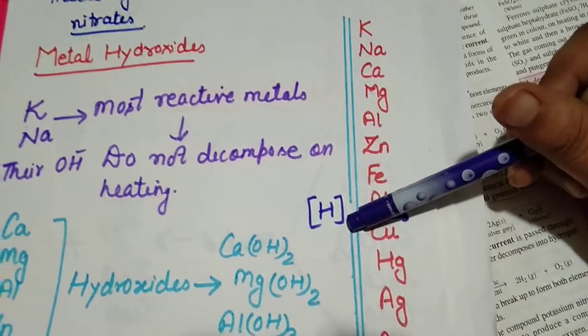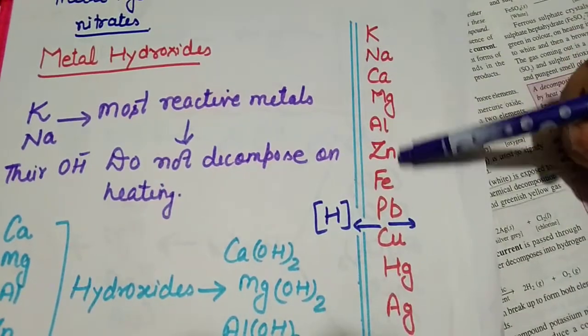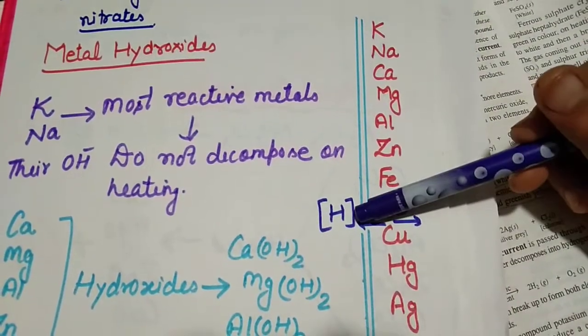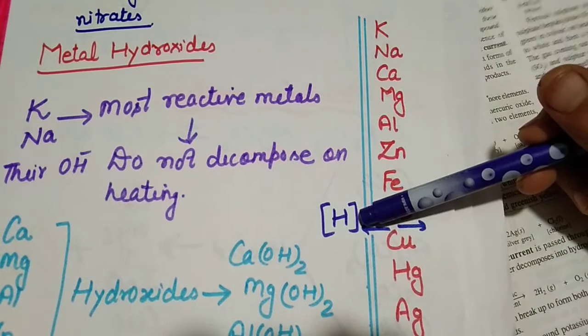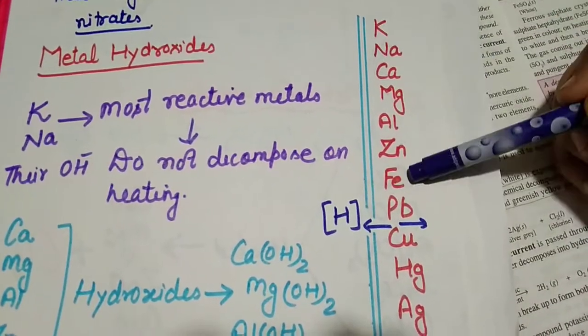Now question arises that hydrogen is not a metal, but it has been kept along with the metals. The reason is it also forms unipositive ion and positive ion like metals.